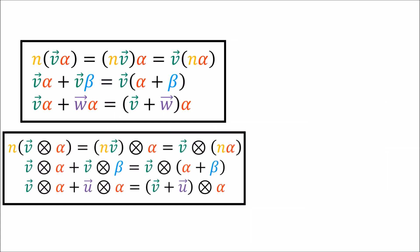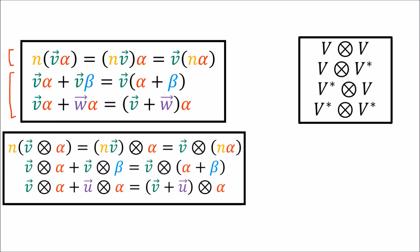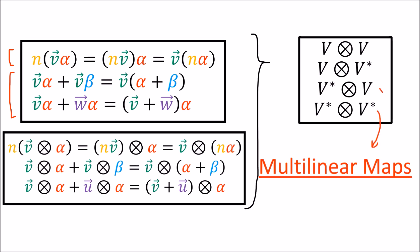To summarize: we learned the formal definition of the tensor product — a way of combining tensors that obeys scaling and adding rules. We also learned that tensors obtained from the tensor product form new vector spaces, denoted using the tensor product of vector spaces. Finally, we learned that all tensors are multilinear maps — functions that take some number of inputs and are linear in each input variable while all other inputs are held constant.